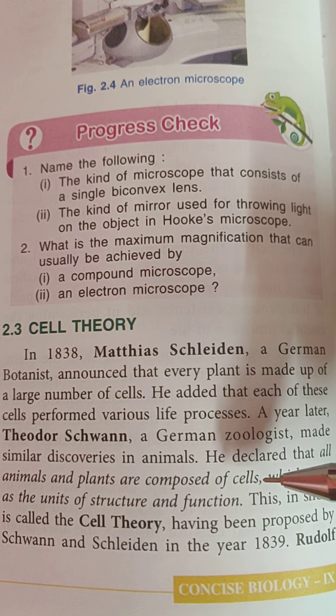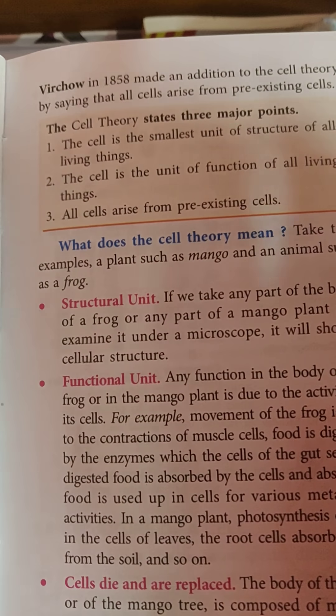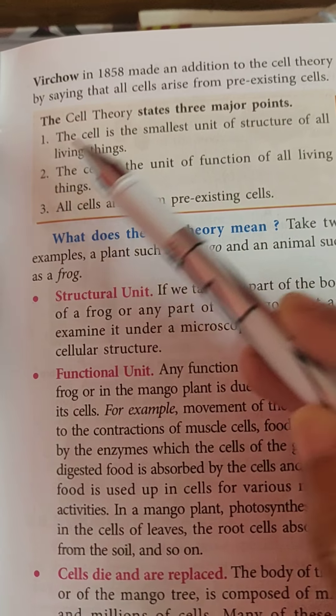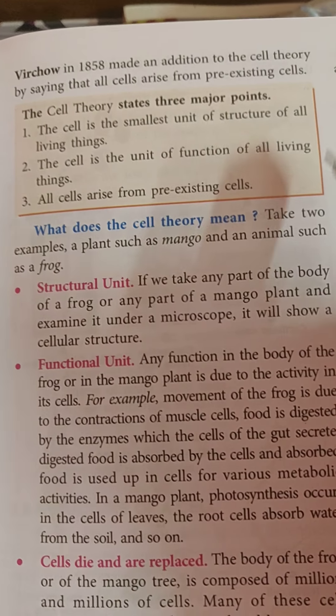Rudolf Virchow in 1858 finally made the latest addition to the cell theory by saying that all cells arise from pre-existing cells.